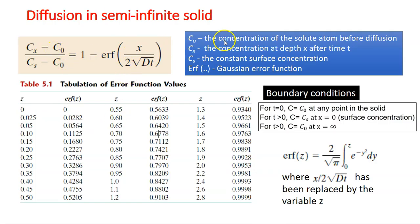So C0 is the concentration of the solute atom before diffusion occurs. And CX is the concentration at depth X after time T. So you can imagine this is a bar or any solid. And when diffusion occurs at whatever location here, after a certain time T, this would be the concentration of the solute.